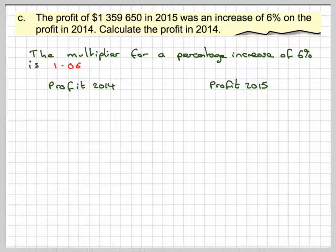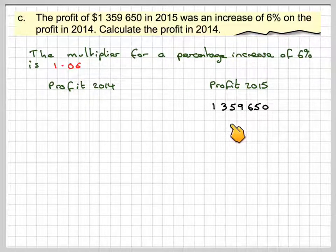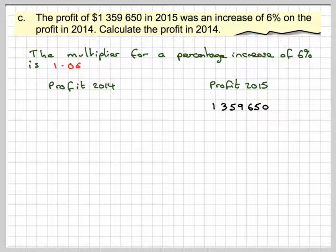This one now goes here. So, 1,359,650. It's going to be, this one here is going to be times 1.06.